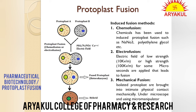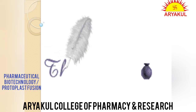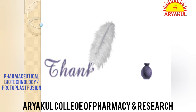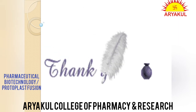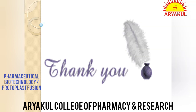2 protoplasts hain, inducer ka istemal kiya, pahle cells pass mein aaye, fusion hua, heterokaryon formation hua, aur heterokaryon formation ke baad finally hybrid humein mil gaya. To this is all about protoplast fusion. More details refer to my notes and please visit our YouTube channel regularly for updates. Thank you very much.